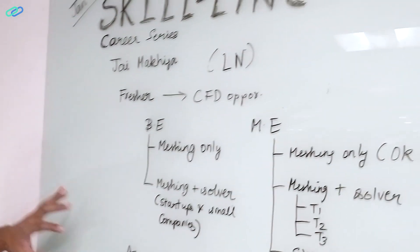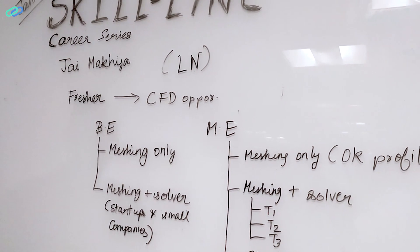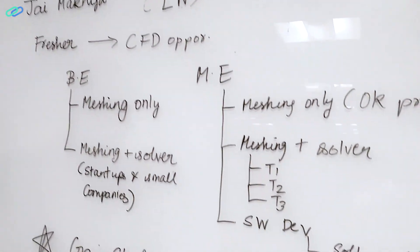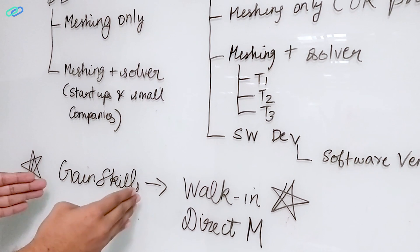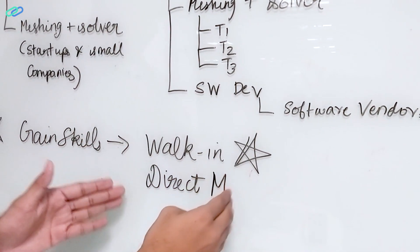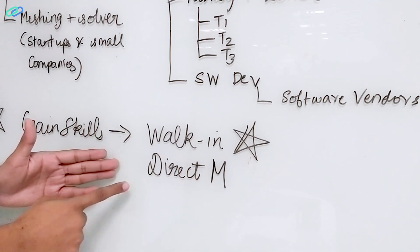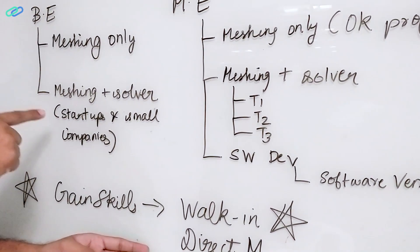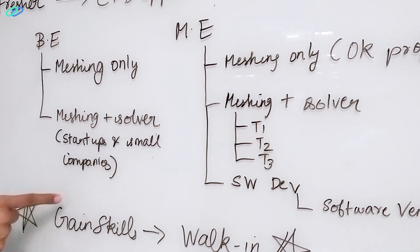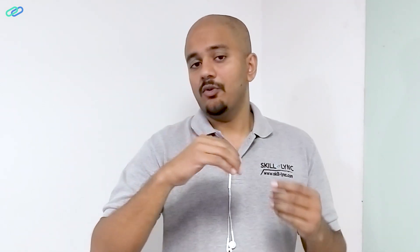Coming back to Jai's case — Jai, it looks like you're a BE graduate. Assuming you've already gained the required skills, you should focus on walk-ins and direct messaging on LinkedIn so that you can get opportunities in startup companies. Focus on startups and small companies. LinkedIn is a great place for that because you can look for companies that do engineering consultancy, check the type of work they do on their website, and gauge the company size using LinkedIn insights.